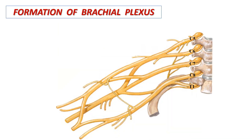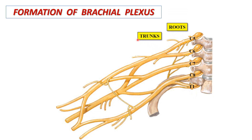Let's see the formation of the brachial plexus. It is formed by the anterior primary rami, or ventral rami, of C5 to C8 and T1 spinal nerves. These are known as the roots of the brachial plexus. Such roots unite to form the trunks of the brachial plexus.